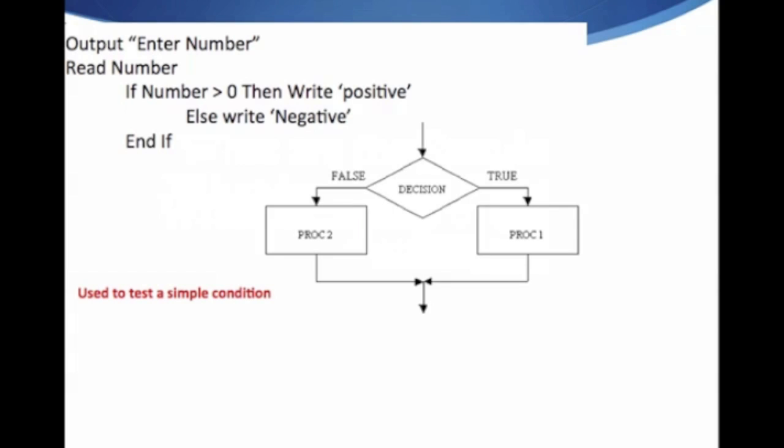If-then-else-end-if is used to test a simple condition. Here is an example of its use. If you look over here where it says output enter number, read number, if number is greater than zero then write positive, else write negative, end if. First you see your first if here, then you see then, then you see else, and here's end if. It's used to test a simple condition. As you can see, here's a flowchart showing this.